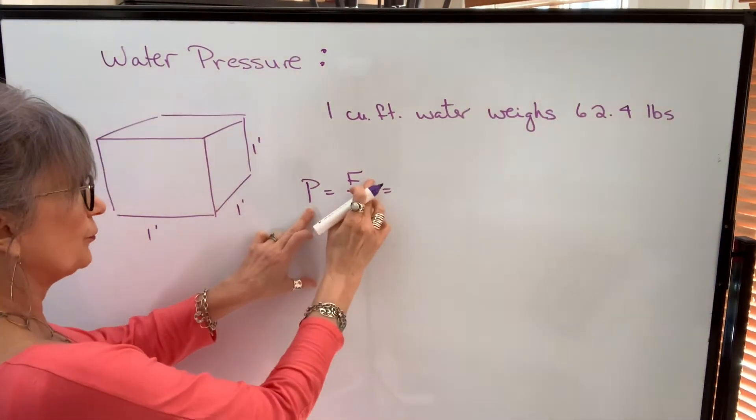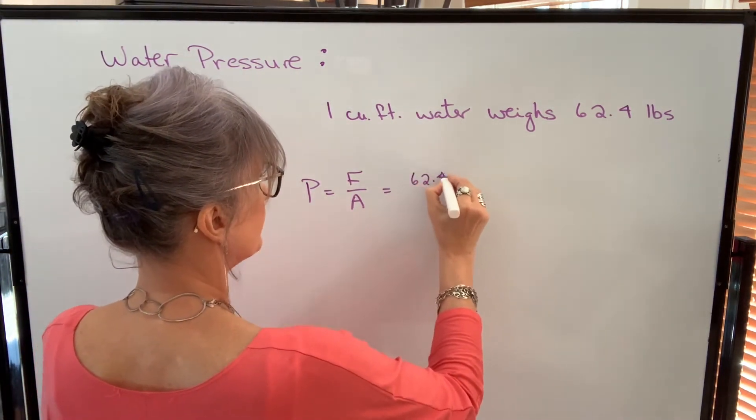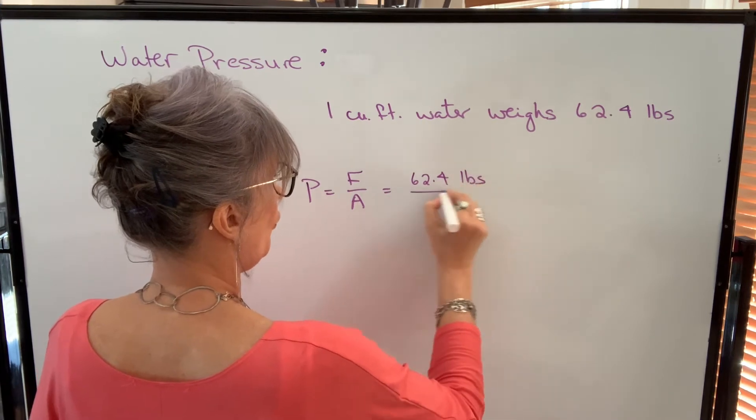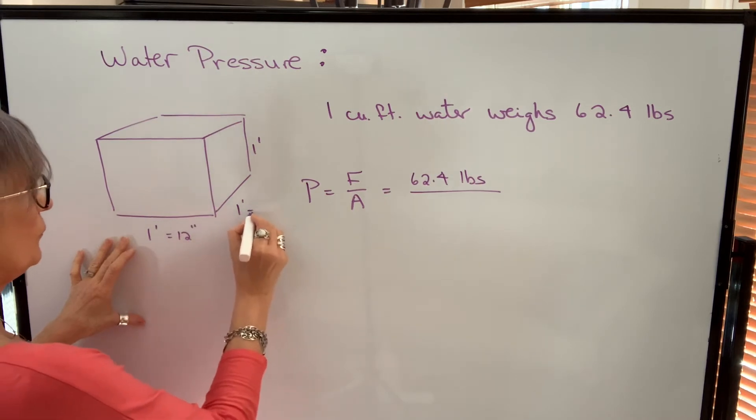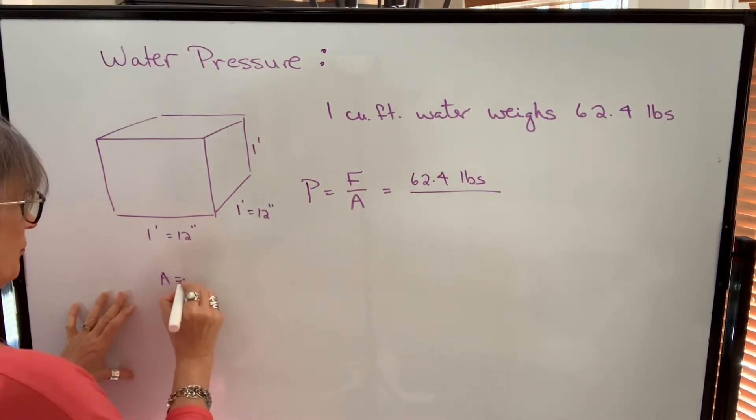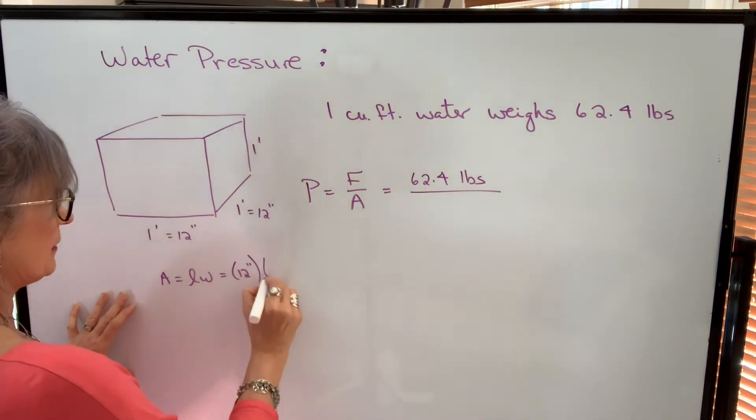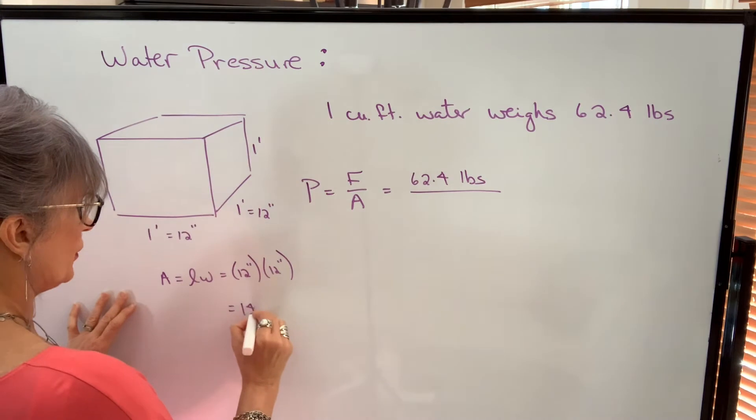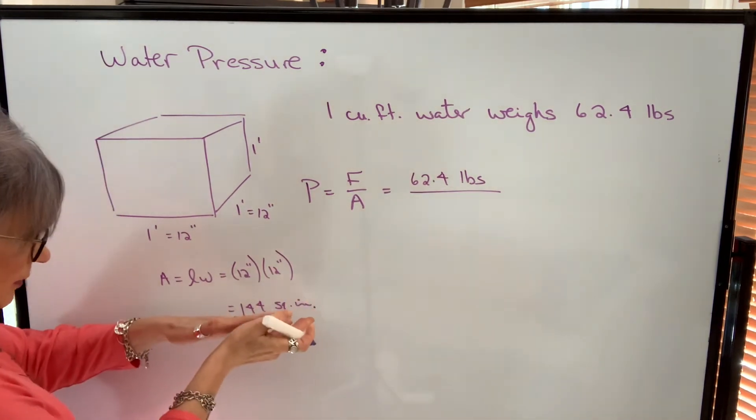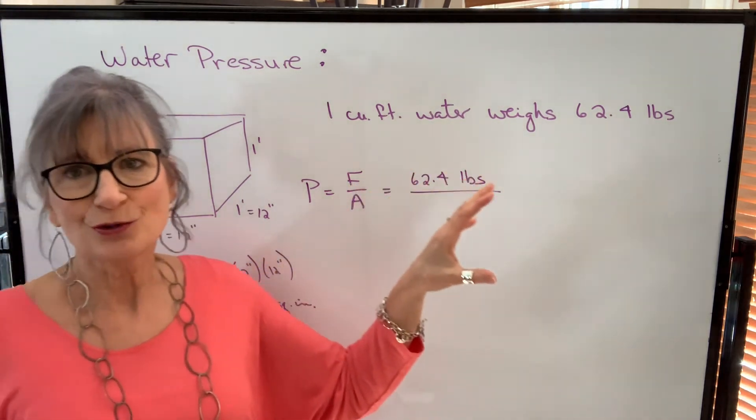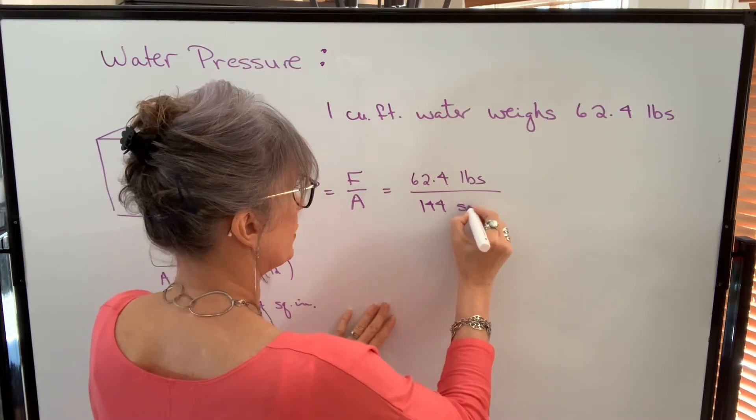Pressure is equal to force divided by area, so the force will be 62.4 pounds over an area of—we have one foot which is 12 inches by one foot which is 12 inches—so the area of that base will be length times width, so 12 inches times 12 inches, which will be 144 square inches. You've got to be careful with units. It's pounds per square inch, so our area has to be in square inches, so our area is 144 square inches.